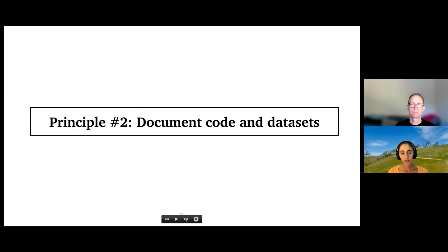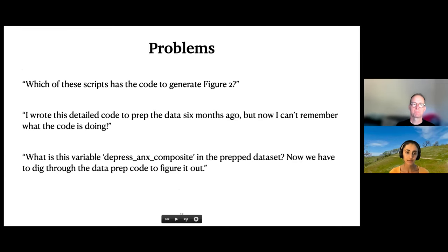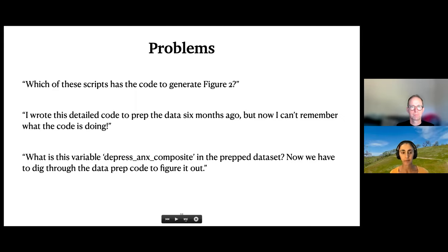The second principle is documenting code and data sets. Some common data analysis woes: you've got Figure 2 in your manuscript and need to update it, but you have multiple R scripts — which one has the code for that figure? Or you wrote detailed data cleaning code six months ago and now, reading through line by line, you can't remember what it's doing.